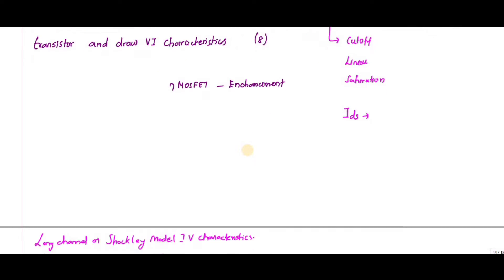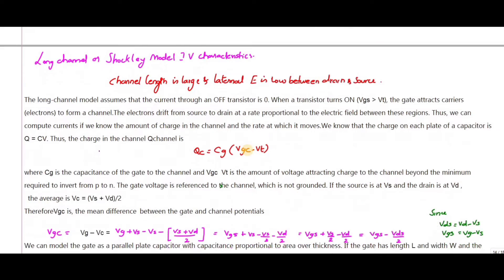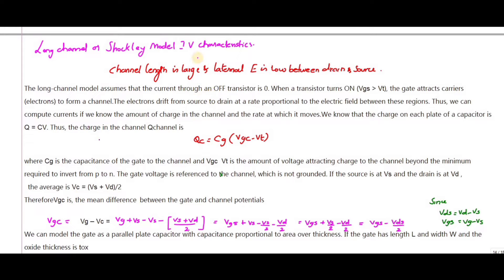For this analysis I'm going to consider a long-channel model, which is the Shockley model. Here the channel length between the source and drain is large and the lateral electric field between drain and source is low. It is assumed that the current through an off transistor is zero. When the transistor is on — that is when VGS is greater than the threshold voltage VT — the gate attracts carriers.